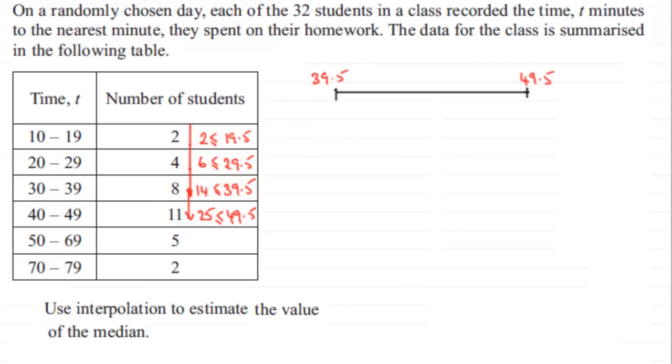I do know that there are 14 values less than the 39.5, and I'm going to write that below. At this upper end, I've got a cumulative total of 25 values that are less than 49.5. Now I'm looking for the 16th value - the median will be the 16th value, and the 16th value is going to be fairly close to this 14.